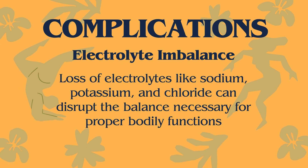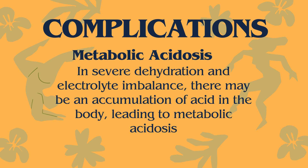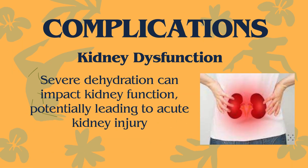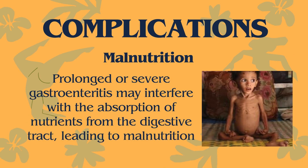Loss of electrolytes like sodium, potassium, and chloride can disrupt the balance necessary for proper bodily functions, affecting muscles, nerves, and other organs. In cases of severe dehydration and electrolyte imbalance, there may be an accumulation of acid in the body, leading to metabolic acidosis. Severe dehydration can also impact kidney function, potentially causing acute kidney injury, and prolonged gastroenteritis may interfere with nutrient absorption, leading to malnutrition.